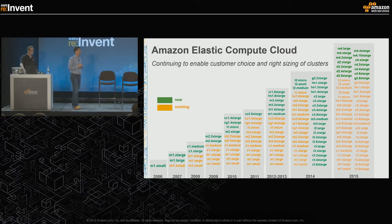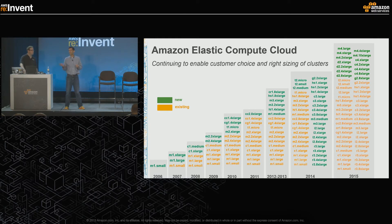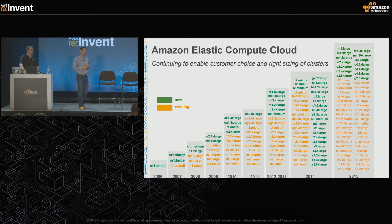Looking at EC2 - since launch in 2006 with a single m1.small instance type, we now have over 50 instance types, driven by customer choice and input. For HPC specifically, we're typically talking about three instance families: the M4 family for general-purpose compute, C3 and C4 for compute-optimized, and R3 for memory-optimized. This goes back to right-sizing your cluster - if you have a memory-bound problem, use the memory-optimized R3 instance type.